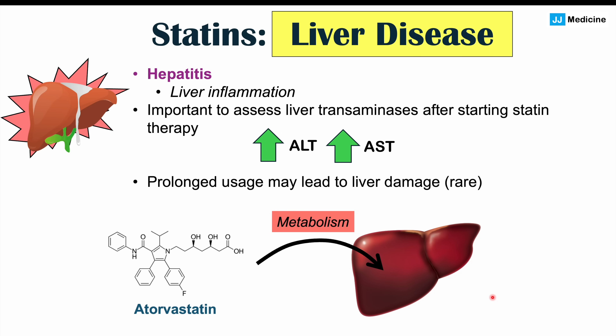What are some of the risk factors for getting true hepatic inflammation? Some include pre-existing liver disease — if you have some problem with your liver already, you're more likely to have true issues with statin metabolism and subsequent liver inflammation. Heavy alcohol use, obesity, and older age are also risk factors. These can in very rare circumstances lead to liver damage, especially if ALT and AST are three times above the upper limit of normal.